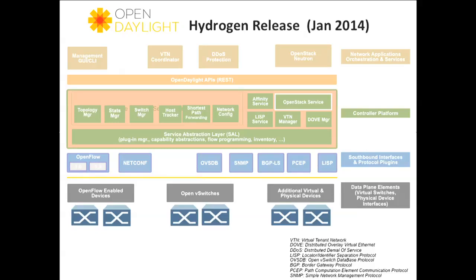Now, how did we wrap it all up and build these release vehicles? This is the canonical picture of all components together. You can see the controller and its different components. In the blue layer underneath are all the southbound plug-ins, and above the REST API are all the applications. Let's see how they fit together.